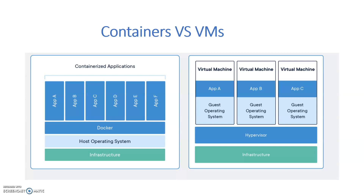Next we come to the difference between containers and virtual machines. On the left side you can see the containerized application: the infrastructure is there, along with a host operating system, and on top of that there is the Docker engine. On the Docker engine there are numerous entities known as containers, which comprise both the libraries and the individual applications along with the essential binaries required for the containers to run.